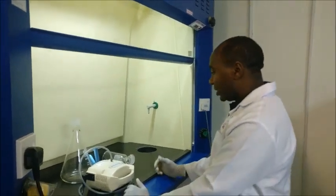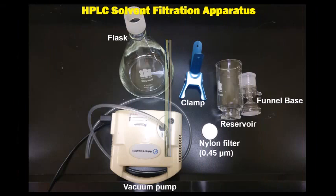So in this stage, what we need is HPLC filtration apparatus, which includes plugs, clamp, reservoir, funnel base, nylon of 0.45 micrometer and vacuum pump. This is the complete HPLC mobile phase filtration unit.